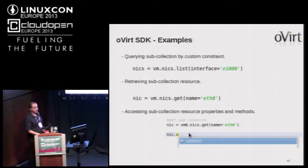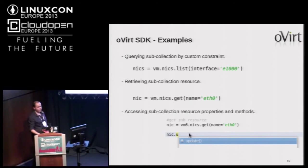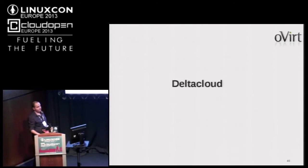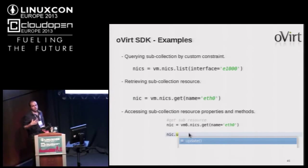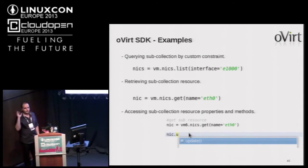You can also get NICs with a specific interface type. More examples are available on our website — basically anything you can do with the API or CLI, you can do with the SDK. It all leads to the same functionality.